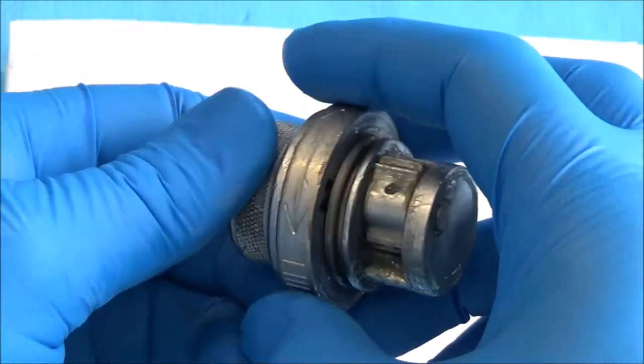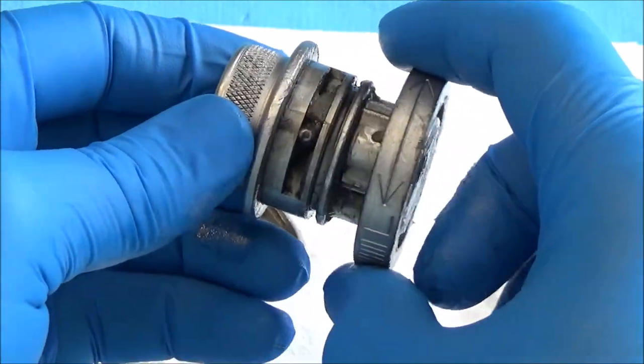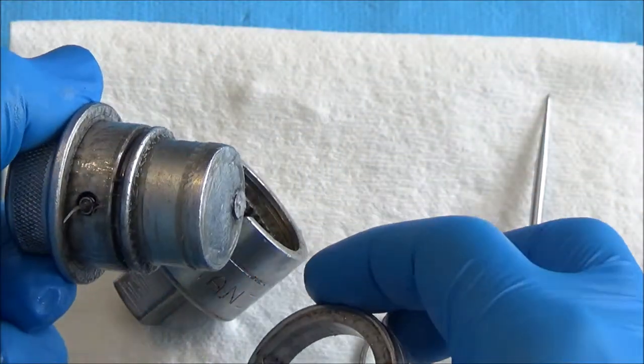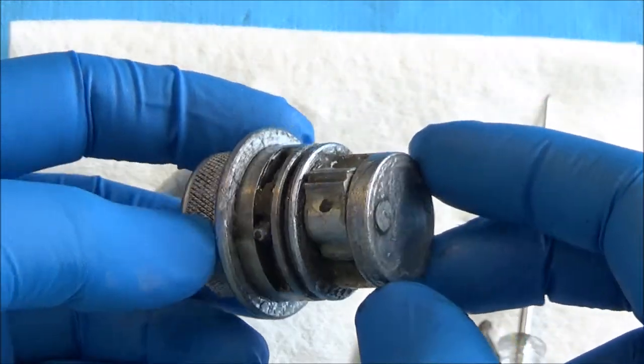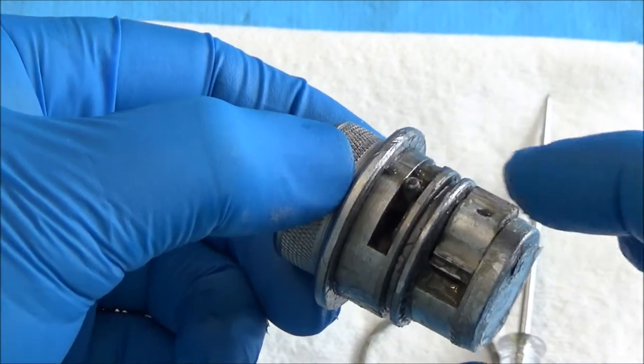So here, if we pull down on this little directional ring, that should pop right off as well as the bearing. Thankfully, it didn't go flying in some weird direction.